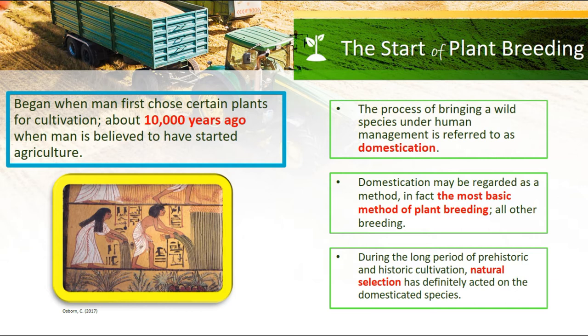During the long period of prehistoric and historic cultivation, natural selection has definitely acted on domesticated species. The movement of man from one area to another brought about the movement of his cultivated species. The introduction into an area of new plant species or varieties from other parts of the world is now an integral part of plant breeding.